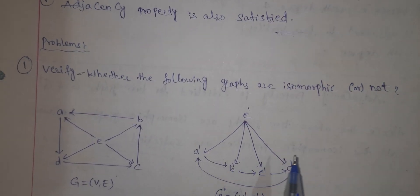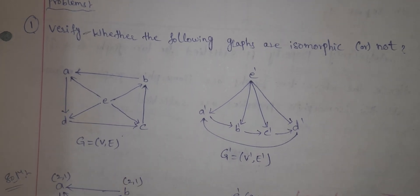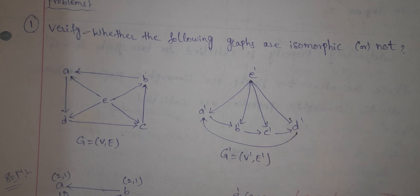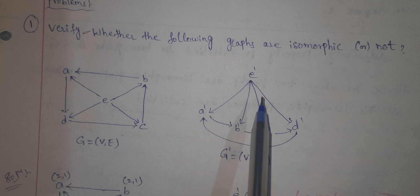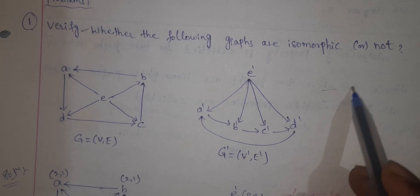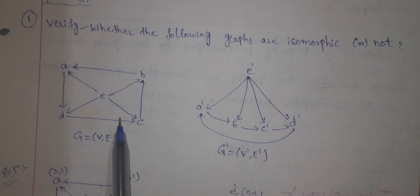Now we have to verify whether the following two graphs are isomorphic or not. We have two graphs. There are no arrow marks, so these are undirected graphs, not directed graphs. We can label them G and G dash, and then check them.